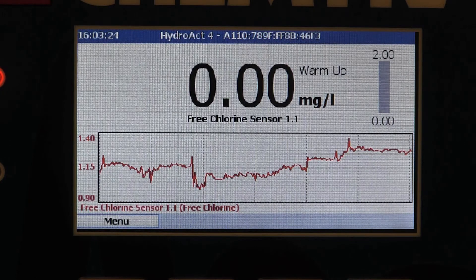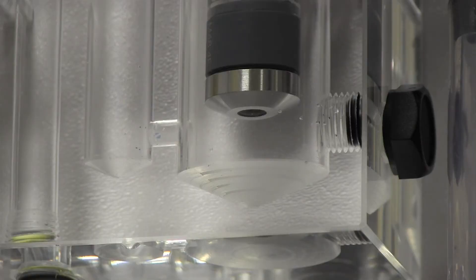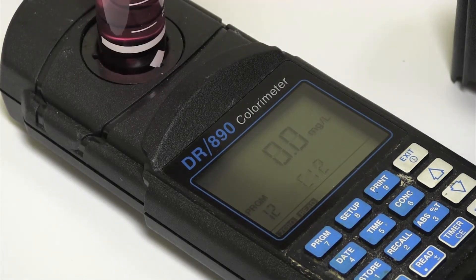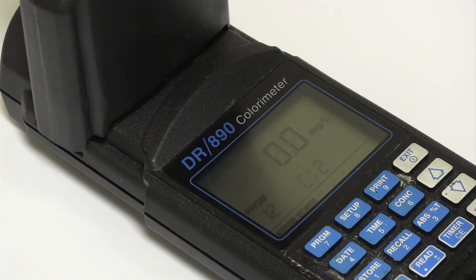When the probe is initially connected to the analyzer, the display will indicate that it's in a warm-up phase. The warm-up and stabilization period should be a minimum of two hours, and during this time the sample flow must have a chlorine concentration that is greater than 10% of the range of the probe.